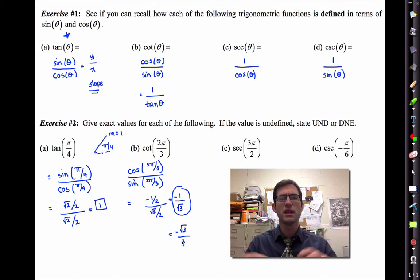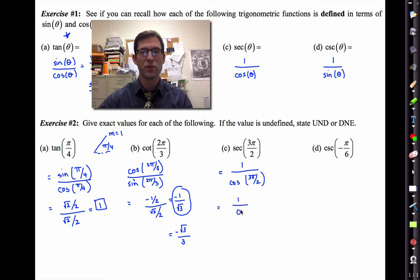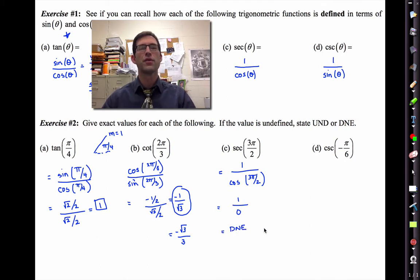In letter C, we're asked what the secant of three pi over two is. The secant is the reciprocal of the cosine function, so that's one divided by the cosine of three pi over two. The cosine of three pi over two is zero, and of course one divided by zero is undefined. So we cannot give a value for the secant of three pi over two — it just doesn't exist.